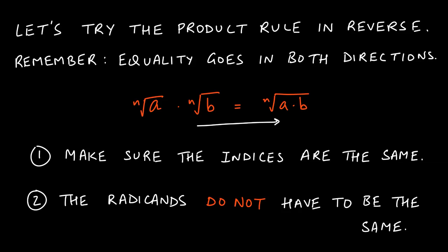Before we do that, we have to ensure a couple of things. The indices have to be the same — if this is the nth root of a, the other must also be the nth root of something. The radicands — the things you're taking the root of, a and b — do not need to be the same.